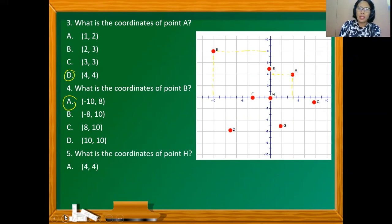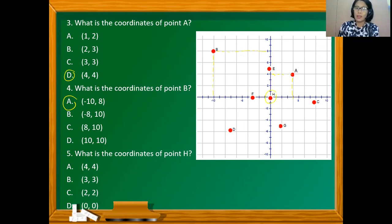How about point H? Is it (4,4), (3,3), (2,2), or (0,0)? Point H is the origin — the intersection of the x- and y-axis — and its coordinate is (0,0).